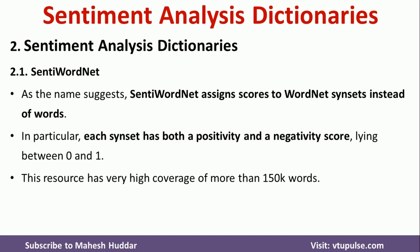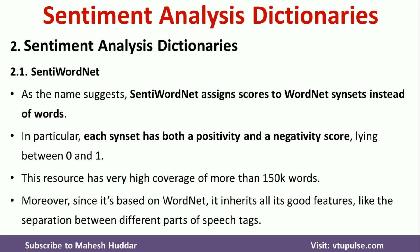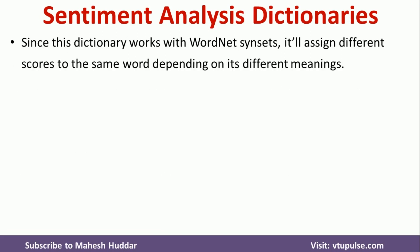SentiWordNet has very broad coverage with more than 150,000 words. Since this dictionary works with WordNet synsets, it assigns different scores to the same word depending on its different meanings.